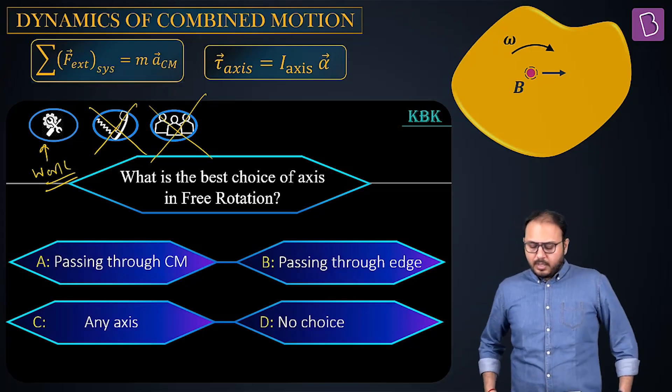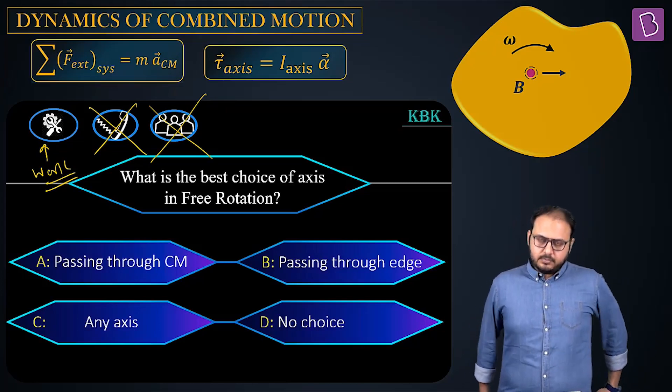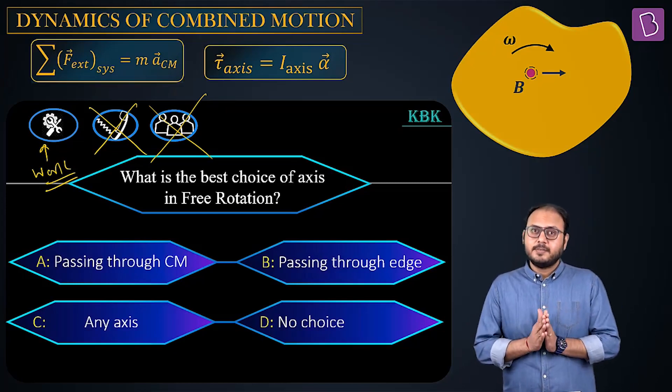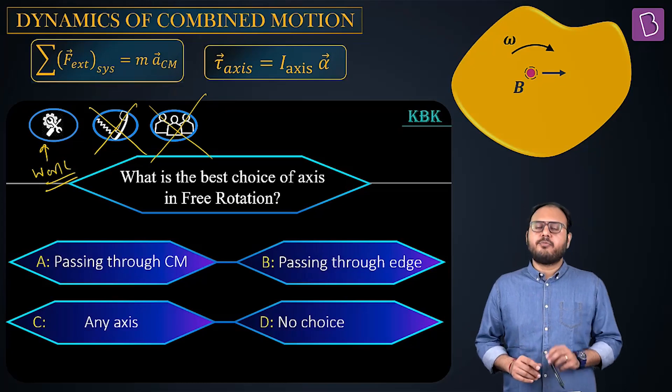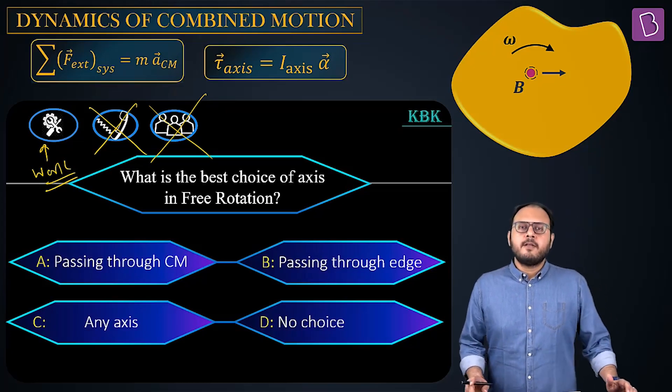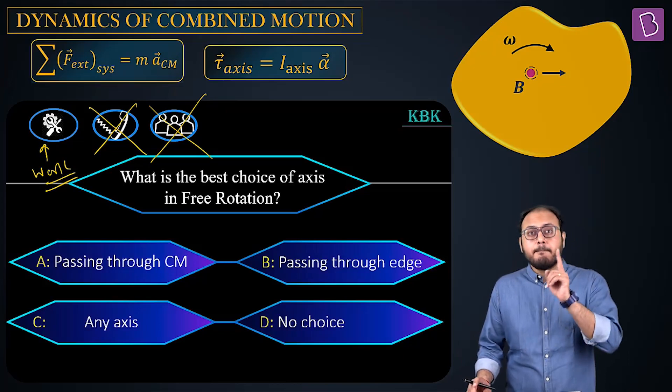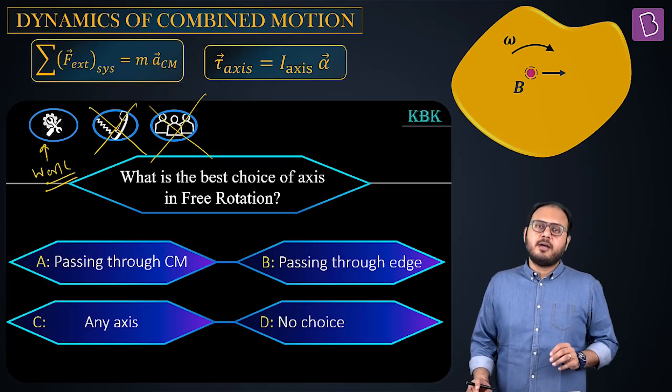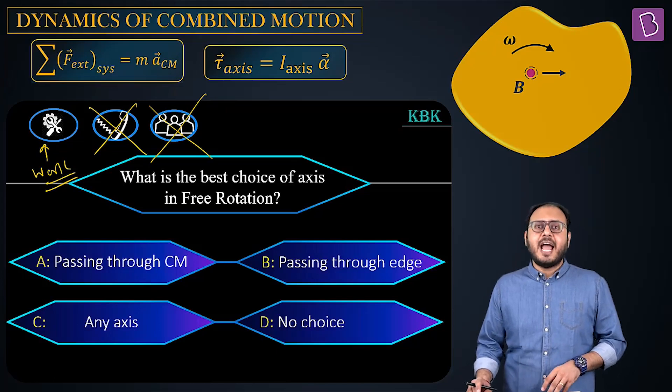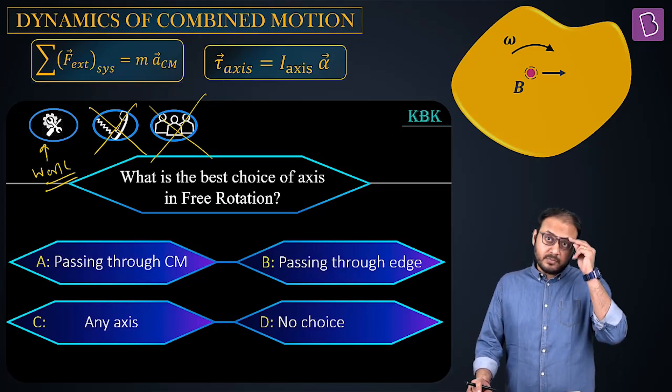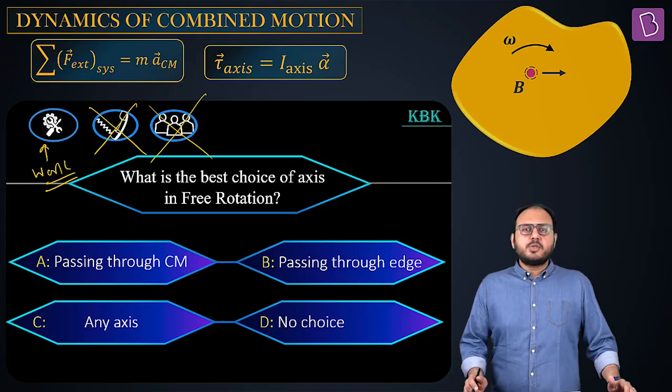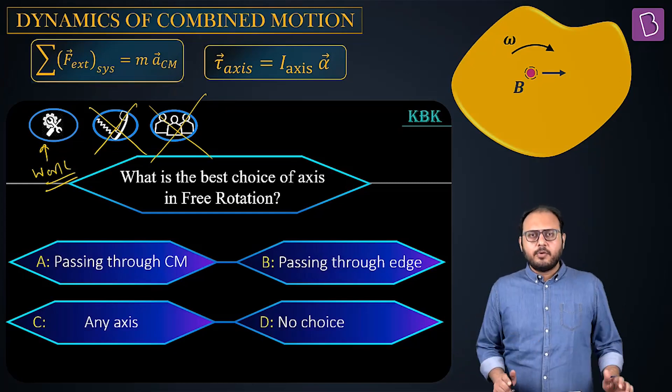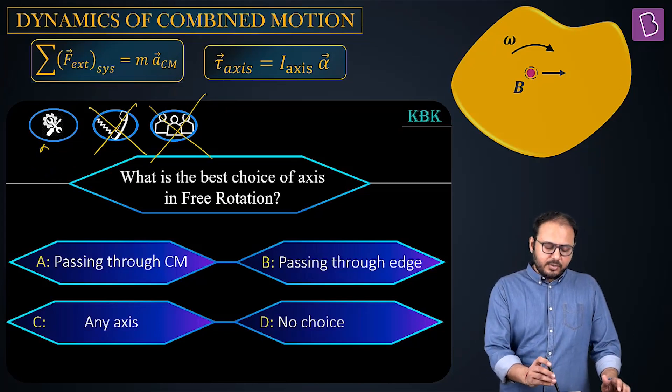Any axis will do. Passing through edge. No choice. No choice. And passing through center of mass. Which is the best? Which is the best option to apply torque equal to I-alpha for combined rotation and translation and why? Seems like there is only one lifeline: Work. Who's going to work? This guy. Are you ready?